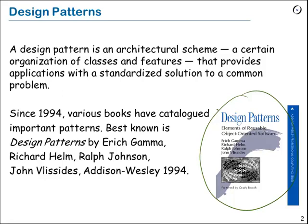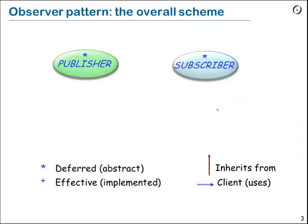The kind of problem for which the Observer pattern works well is the kind reviewed in the last segment: we have a publisher that can produce some instances of a certain event type — and we might have several publishers — and on the other side we have a number of observers waiting for some of these events to occur and reacting when an event of interest to them occurs.